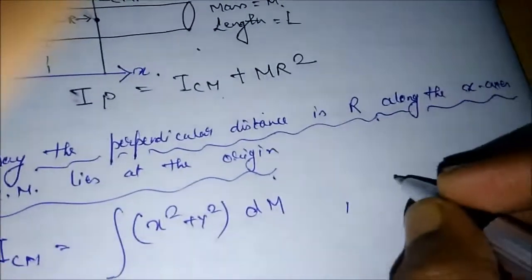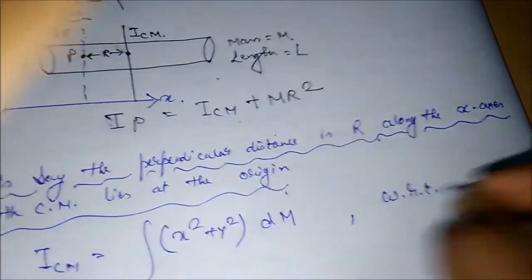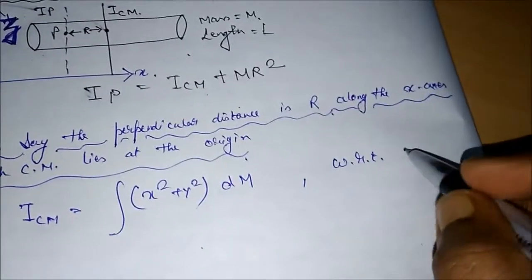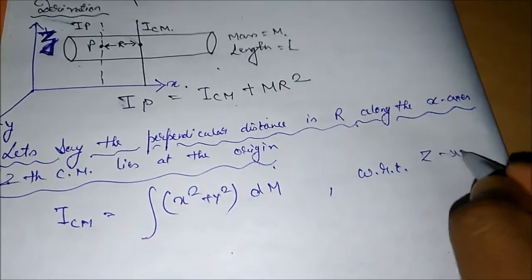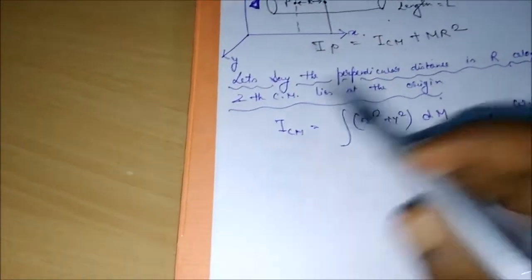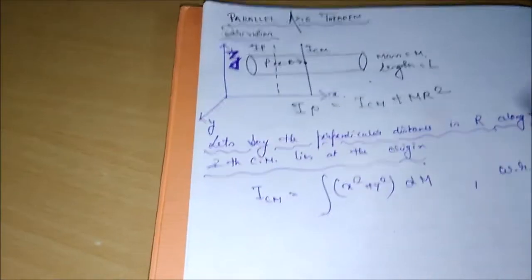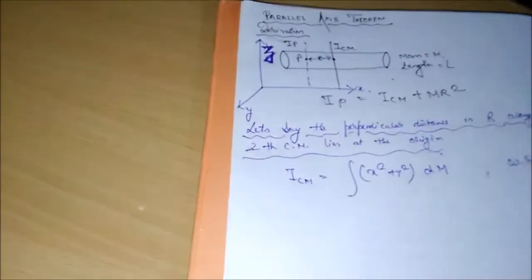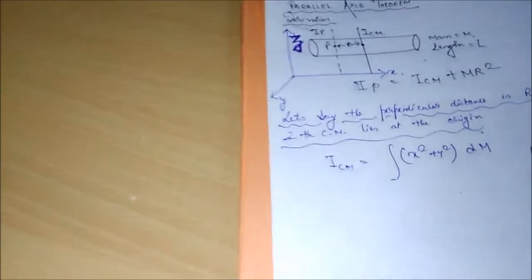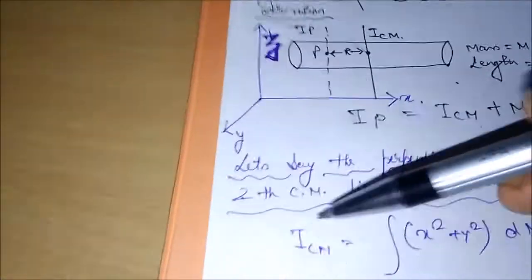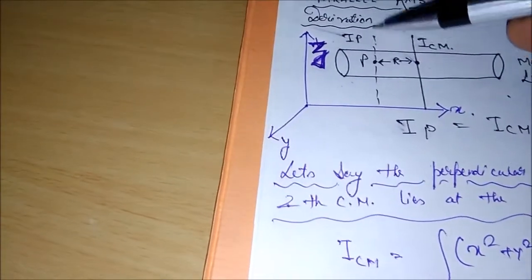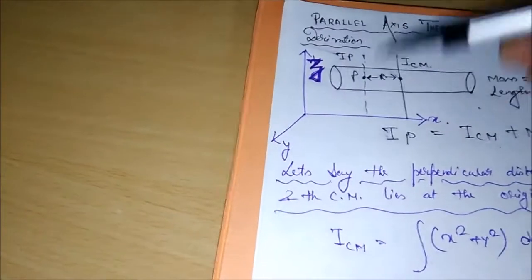Now, with respect to the z-axis. That's right. All right, now remember in all the scenario, the R is considered to be at the perpendicular distance. Remember that thing. Now what we are going to do: this is the Icm, but what we need is to find the Ip, the moment of inertia at the point P.